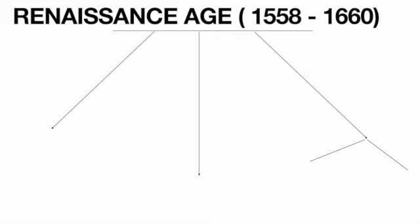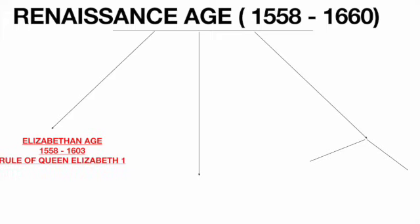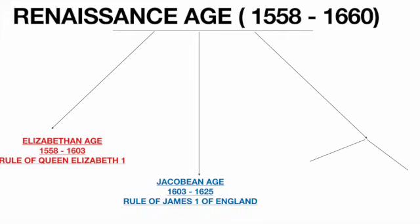The Renaissance period is further divided into three major parts. The first is the Elizabethan Age, from 1558 to 1603 — the time period when Queen Elizabeth rules the throne. Then we have the Jacobean Age, from 1603 to 1625, under James I of England, also called James VI of Scotland. He was the first ruler by the name of James in England, but his family's lineage in Scotland made him the sixth ruler there — hence James VI.